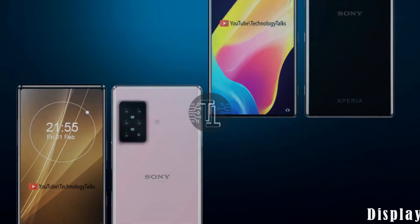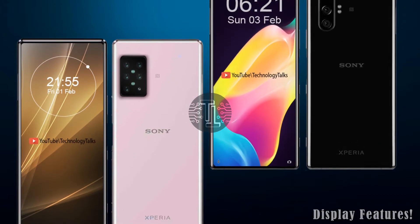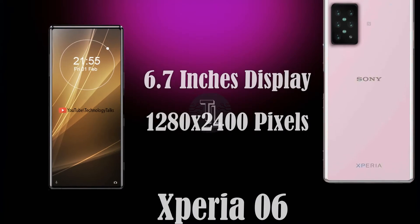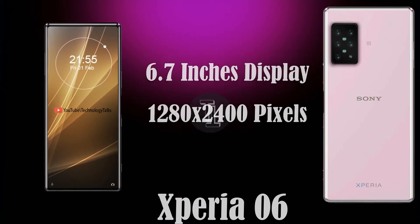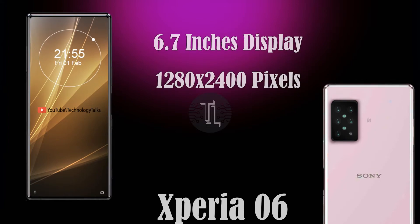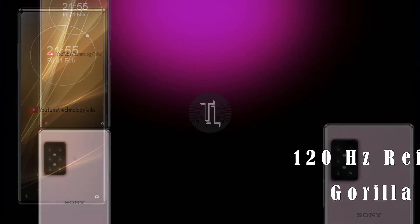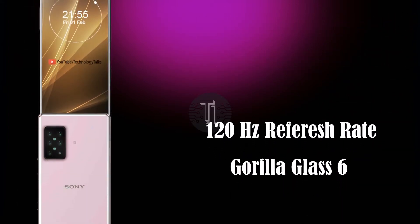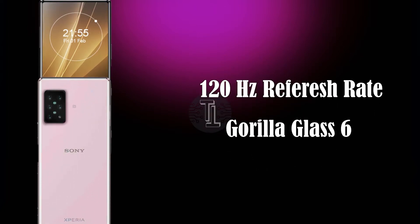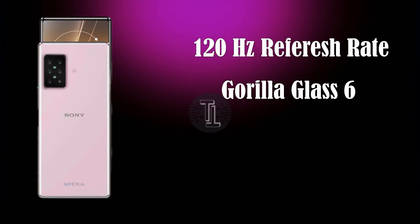First of all, we will discuss the display features of both mobiles. The Xperia 6 contains the AMOLED display of 6.7 inches, 4K HD display with the amazing resolution of 1280 x 2400 pixels with the refresh rate of 120Hz. It also contains the Corning Gorilla Glass 6 protection with the amazing ability to protect.